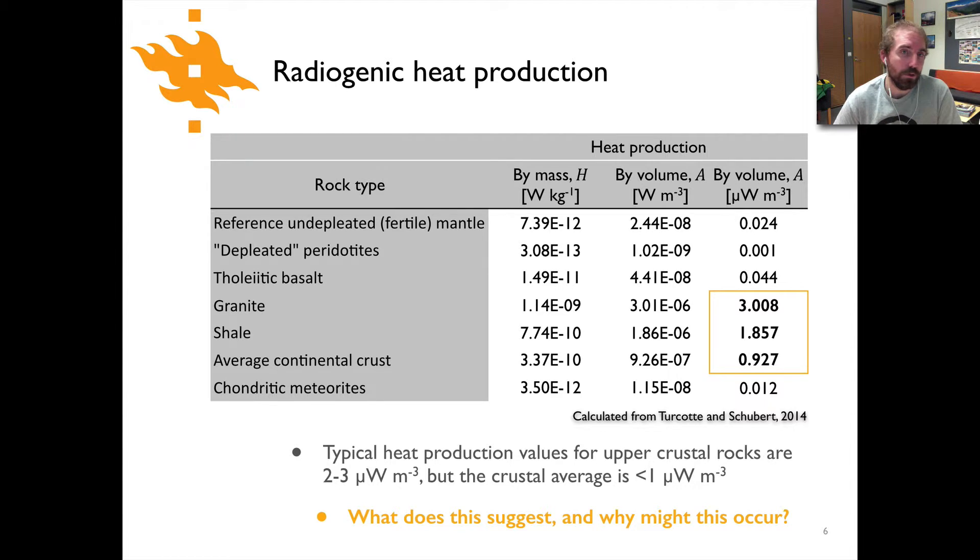The typical values are something like two to three microwatts per cubic meter for upper crustal rocks, but the crustal average is actually less than one microwatt per cubic meter. So upper crustal rocks, we have high heat production. As a whole, the crust though has heat production that is less than one microwatt per cubic meter on average. What does this suggest to you? And can you think of any kind of process that might result in this occurrence? Pause the video for a second, think about this, the fact that we have what appears to be an increased concentration of heat producing elements in the upper crust, and see what kind of ideas you can come up with for an explanation.